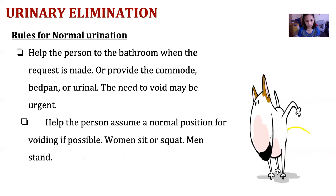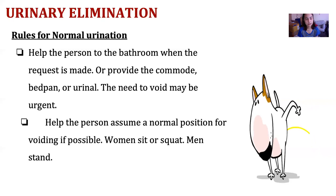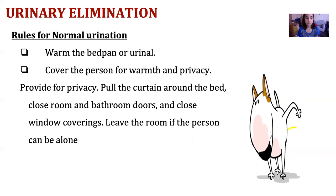Even when the person is hospitalized, we should follow their voiding habits. Help the person to the bathroom when the request is made, or provide a commode, bedpan, or urinal, as the need to void may be urgent. We cannot postpone it if they need to urinate or defecate. Help the person assume a normal position for voiding if possible — sitting or squatting for women and standing for men. Warm the bedpan or urinal; in most hospitals they use a bedpan or urinal washer to clean it appropriately. Cover the person for warmth and privacy.